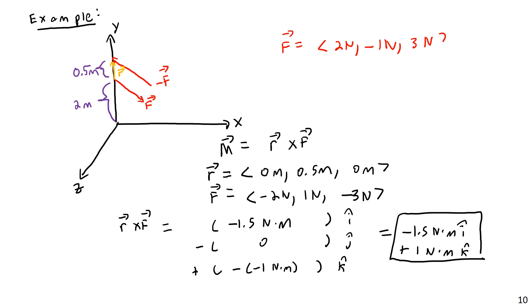All we have to do is take a displacement vector from anywhere along one force's line of action to anywhere along the other, making sure we use the correct F vector such that R goes toward that force rather than away from it. That's all there is to it. That'll do it for Part 2 of this lecture. In Part 3, we're going to be looking at finding equivalent force-couple systems, which is a way of moving forces from one location to another while preserving their rotational tendencies. Let me know if you have any questions, and thank you.